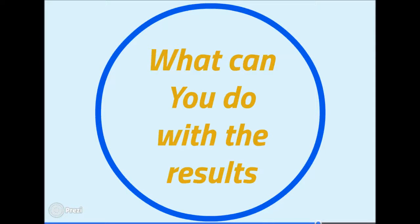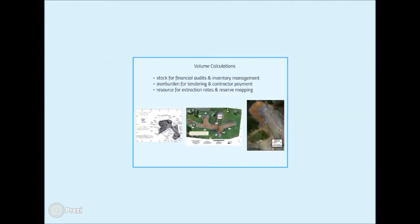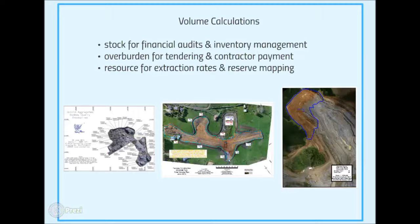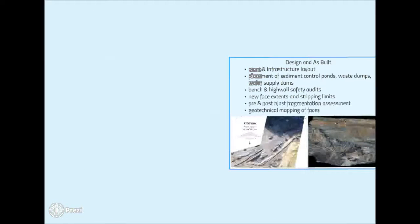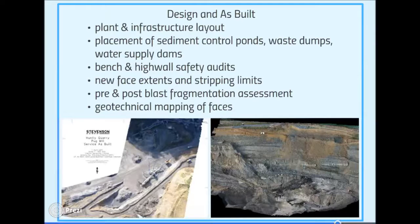Now I would like to show you some of the uses that we put our data to. Most of our UAS work is for volume calculations — this could be stockpile volumes, overburden stripping volumes, or figuring out how much rock is available from a newly opened face. The UAS enables us to do these surveys more safely, quickly, and accurately than before, and the results can be presented using the aerial images as a background. Having a good image of an area makes it easier to see how a new piece of plant will fit within existing operations, and it makes finding services easier if an as-built has a picture. The data can be used to assess bench and high wall safety or the extent of proposed stripping, while a high-resolution image can be used to assess pre- and post-blast fragmentation or map geotechnical features of a high wall face.